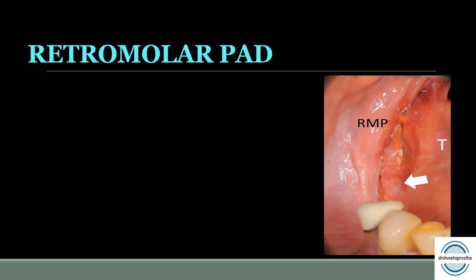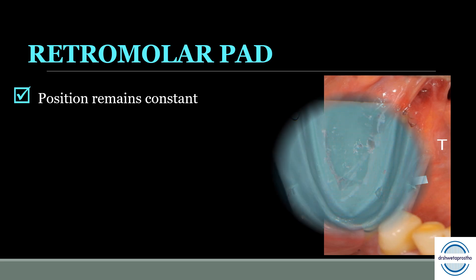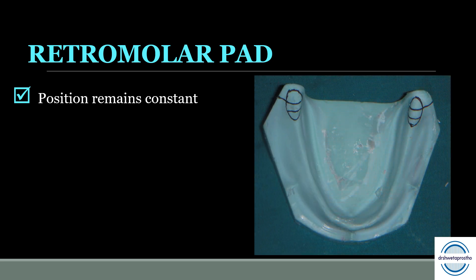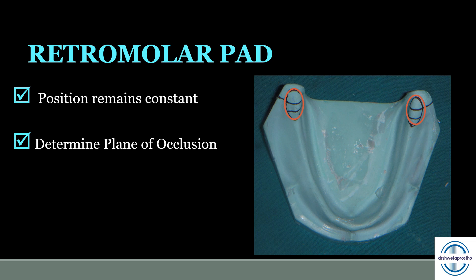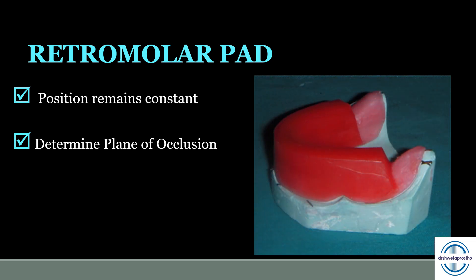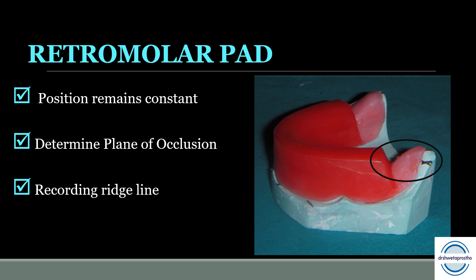Retromolar pads: a very important landmark on the mandibular cast, because the position of the pads remains constant even after the natural teeth are extracted. Once we have marked the retromolar pad, divide it into three equal parts. It acts as an excellent guide for determining the plane of occlusion — when fabricating the occlusal rims, the height of the rims posteriorly should be flush with the two-thirds height of the retromolar pad. It also helps in recording the ridge line.